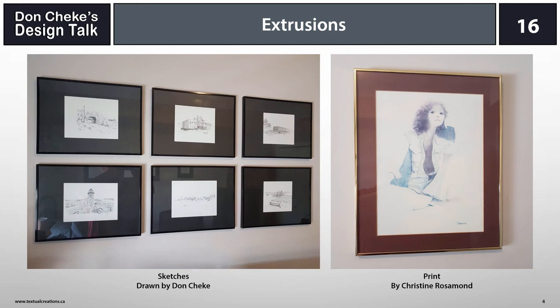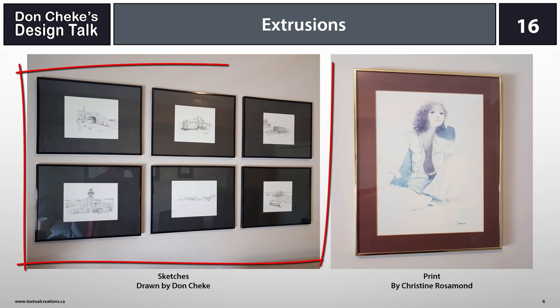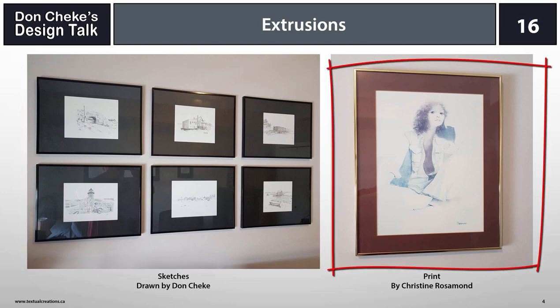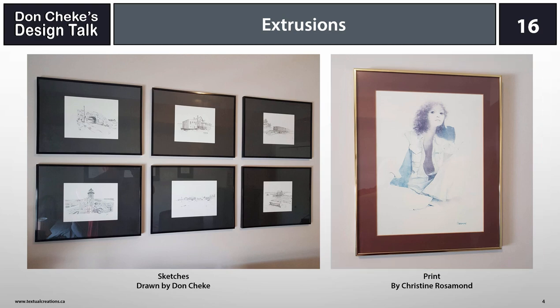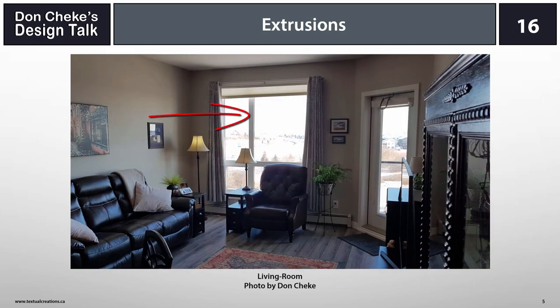Here in my office, all the picture frames are made from extrusions. Those on the left are made with some type of shiny plastic, while others — like the Rosamund print on the right — are made from aluminum extrusions. In every room throughout the building, all the windows are made with PVC extrusions, which is very common in Canadian residential applications. More common in commercial applications is the use of aluminum extrusions.